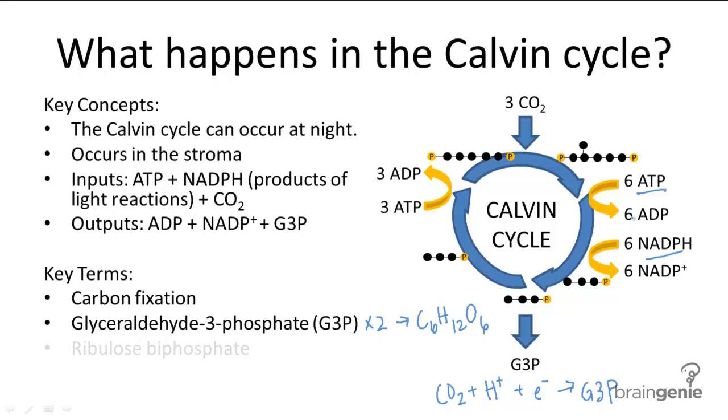So as carbon dioxide cycles through, it is shaped and reshaped with ATP until it finally forms G3P. It's not terribly important to know the specifics of the Calvin cycle, but you should know ribulose biphosphate. And this is a five-carbon atom that is regenerated each time the cycle turns.